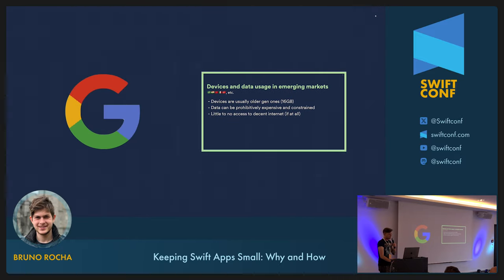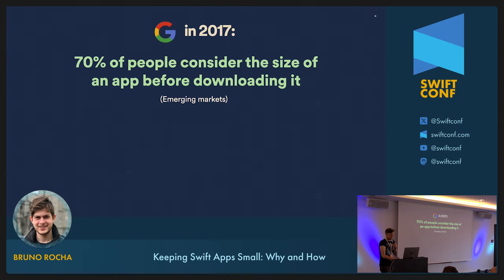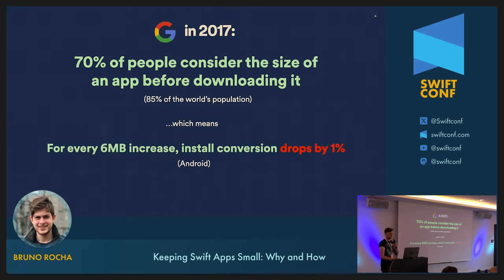Google was the first company to notice something was going on here. In 2017, they ran a study in Thailand and found that in these types of countries, 70% of people considered the size of an app before downloading it, out of concerns for storage and data costs. Emerging markets represent 85% of the world's population. By combining these two facts, they found a strong correlation between app size and downloads: for every 6 MB increase in app size, they saw a 1% drop in install conversion rates.